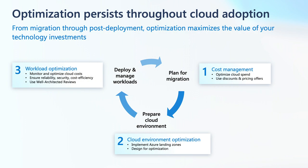I'd like to share how we think about optimization as it pertains to Cloud adoption. Optimization happens at all phases of the Cloud journey, and it starts as soon as you plan for migration. Cost management is one of the most important things an organization can do to ensure successful migration and ultimately digital transformation. It consistently ranks as one of the top priorities for customers, particularly during the economic climate we find ourselves in today.